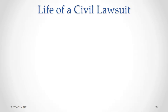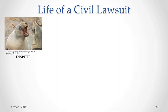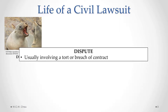Let's look at the life of a civil lawsuit from beginning to end. A civil lawsuit involves one private person or business suing another private person or business. That's in contrast to a criminal lawsuit where the government — which in Canada we call the Crown — accuses a person of having committed a criminal offense. With a civil lawsuit, we always start with some kind of dispute between two or more parties. That dispute can involve what we call a tort, which is some kind of wrongful act that has caused injury or loss to another person — we'll talk more about torts in another module — or it could involve a breach of contract, which we'll also cover in another module.